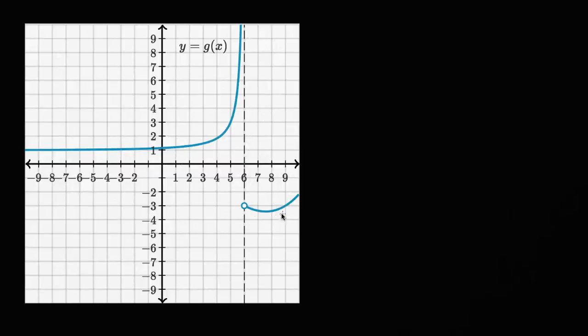So over here we have the graph of y is equal to g of x. And what I want to do is I want to figure out the limit of g of x as x approaches positive six from values that are less than positive six, or you could say from the left, from the negative direction. So what is this going to be equal to? And if you have a sense of it, pause the video and give it a go.